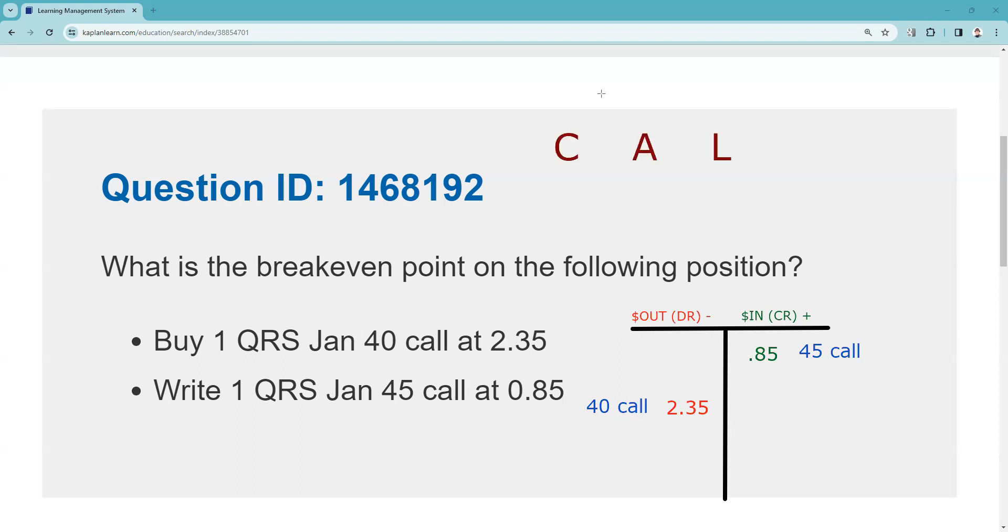Net debit of one and a half. So, call out of the lower is a memory aid about how we get breakevens in call spreads. Call up, we're going to take the lower strike, 40, we're going to add the net premium of one and a half. Doesn't matter whether that's a debit or credit. Doesn't matter if it's a call spread, whatever that net is, that's what we add.